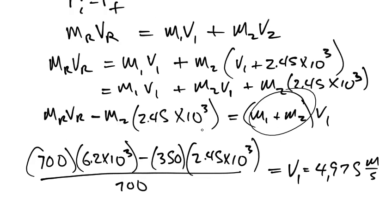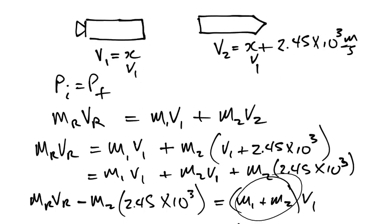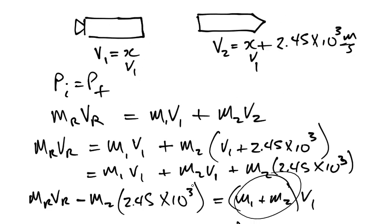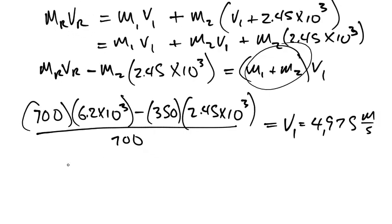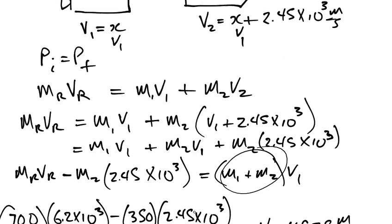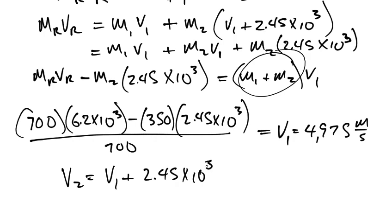Now that we know what V1 is, all we need to do is add 2.45 times 10 to the power of 3 to get V2. So V2 is equal to V1 plus 2.45 times 10 to the power of 3.